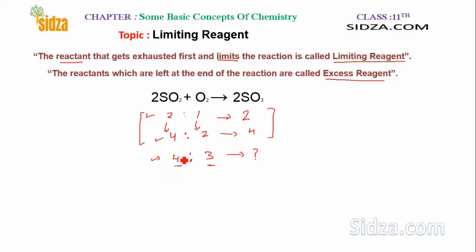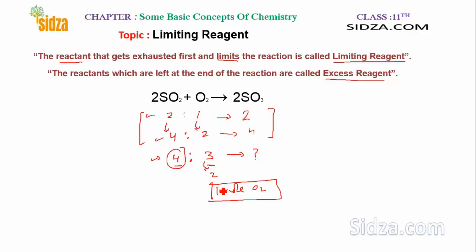When all the sulfur dioxide is consumed, out of the 3 moles of O2 only 2 moles of oxygen will react, and 1 mole of oxygen will be left unreacted. So oxygen is the excess reagent and sulfur dioxide is the limiting reagent here.